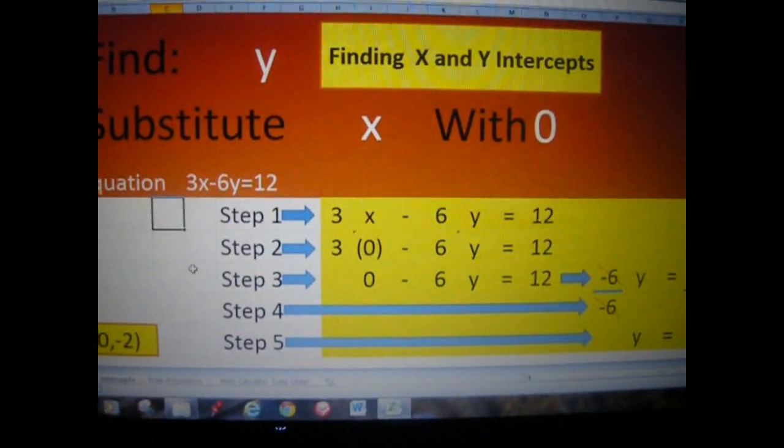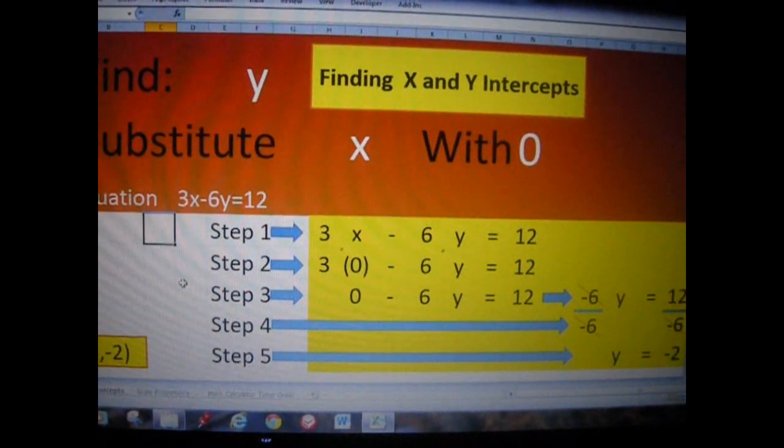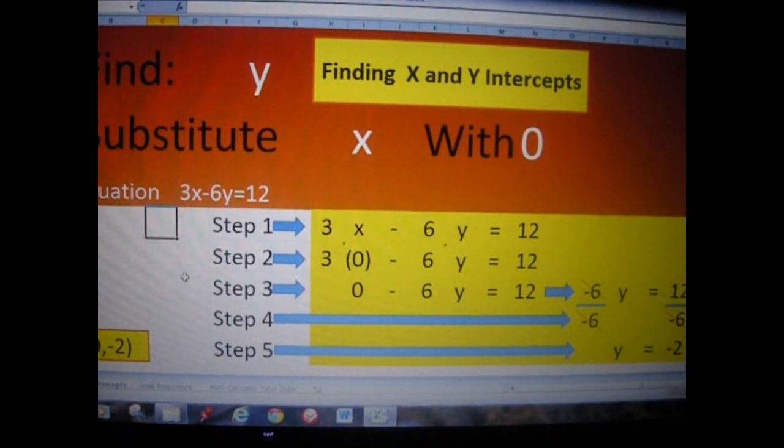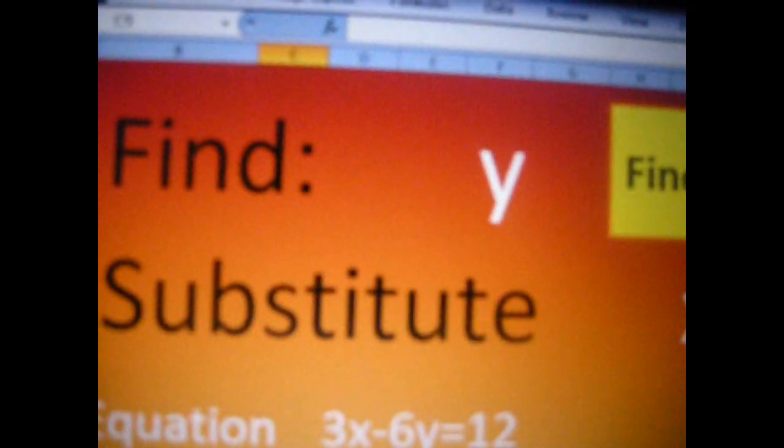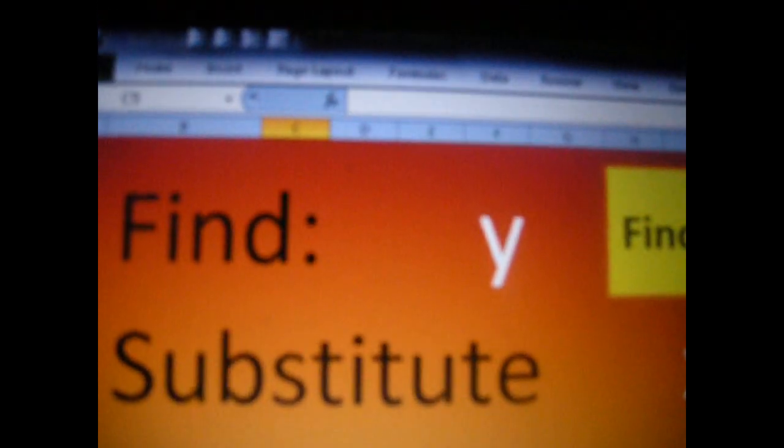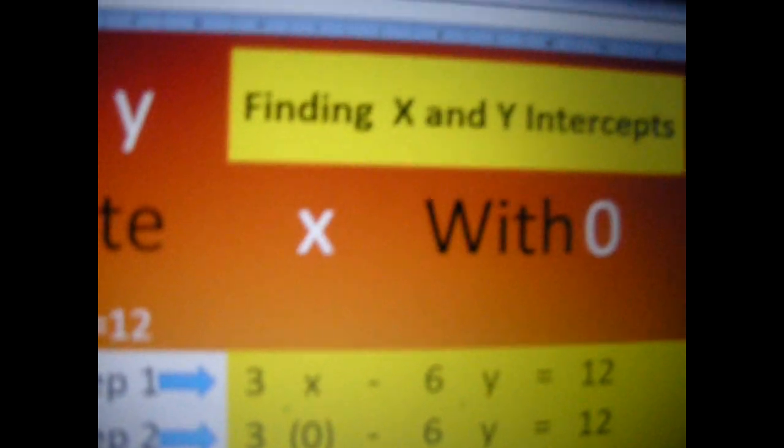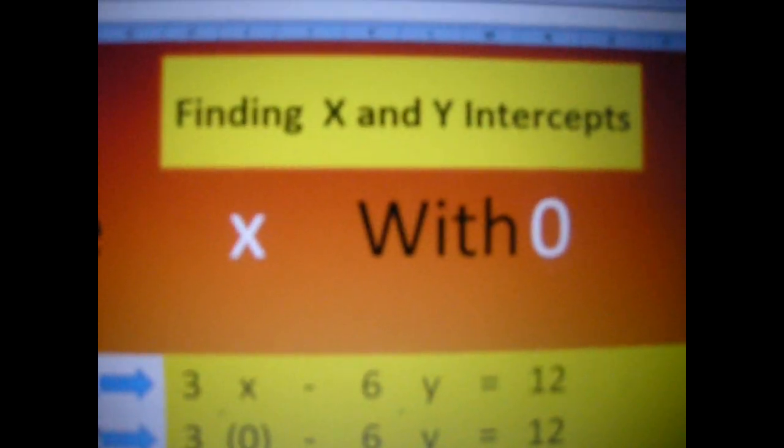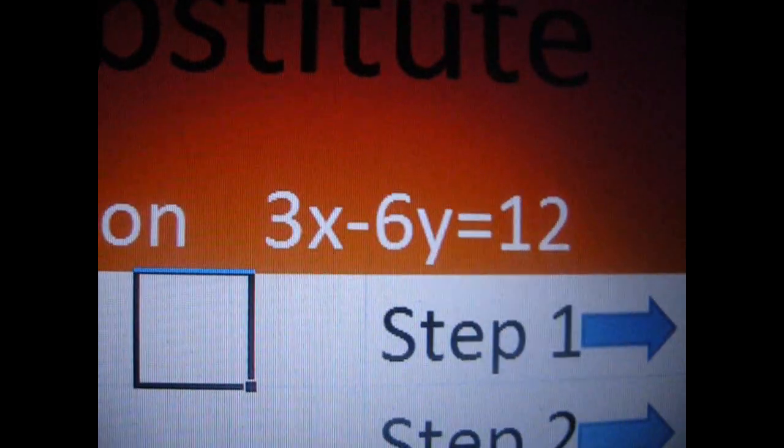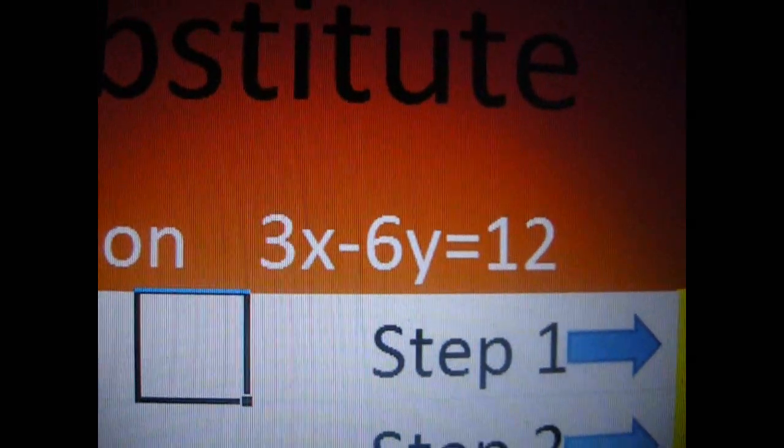Let's go ahead and show you the four locations or fields that you can type in. Everything else is protected. You tell it what you want it to find. In this case, I want it to find Y. So that means you would substitute X with 0. So those three fields, and then of course the equation, you type it in.